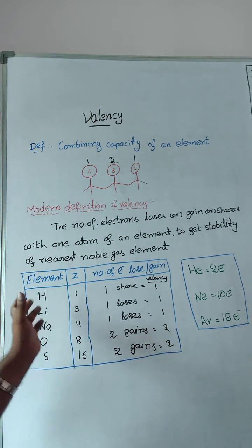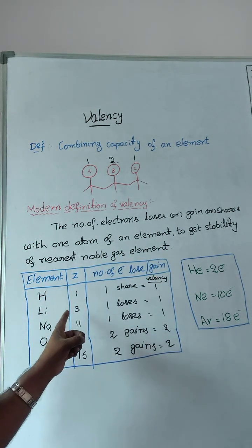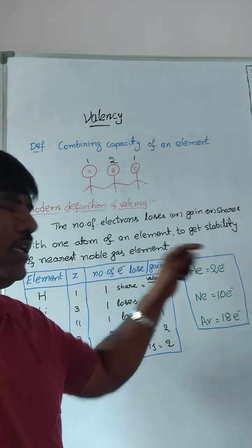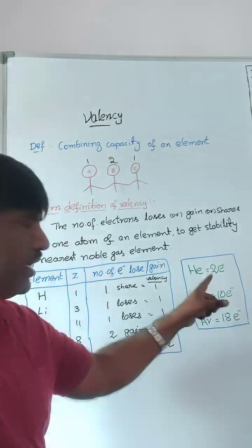Next, lithium, which is nearest noble gas element, helium only. Yes, lithium atomic number three, nearest noble gas element is helium only. Because by losing one electron, it will get stability of helium.